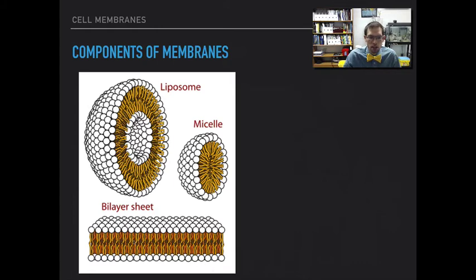And then, of course, a bilayer sheet. If you have enough of it, it just would appear as just a single sheet. Of course, we're going to look at this as part of the cell membrane.